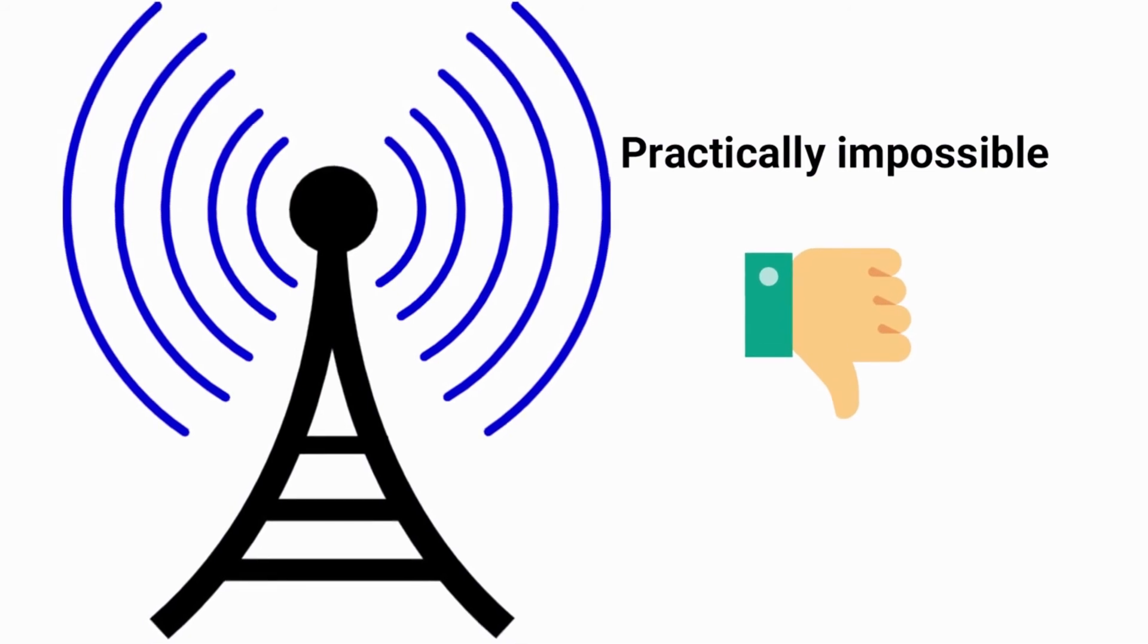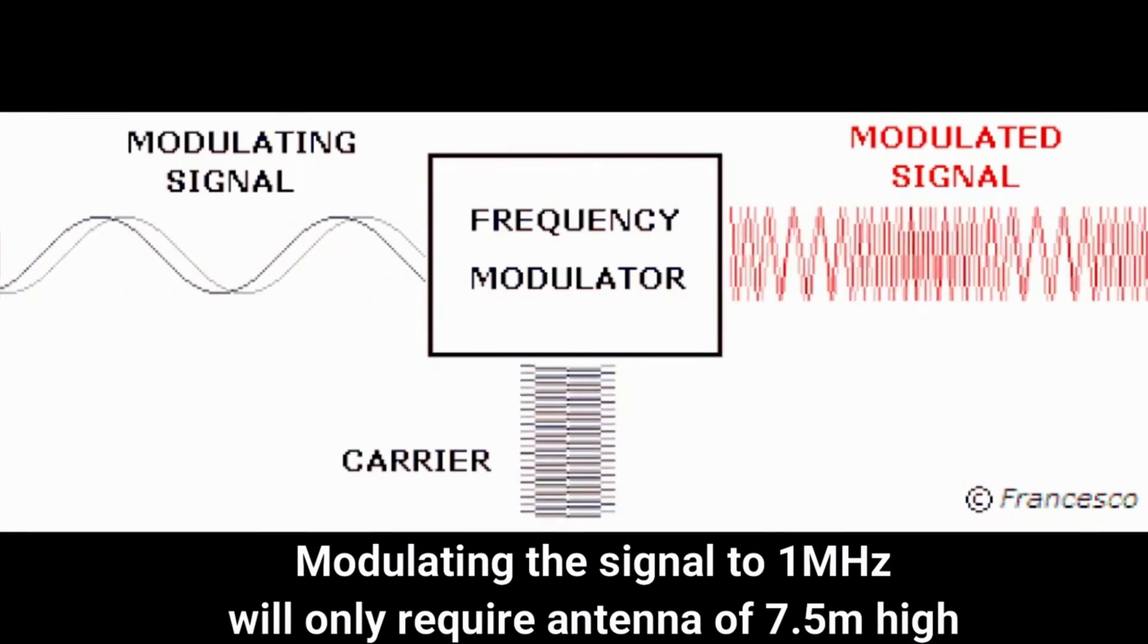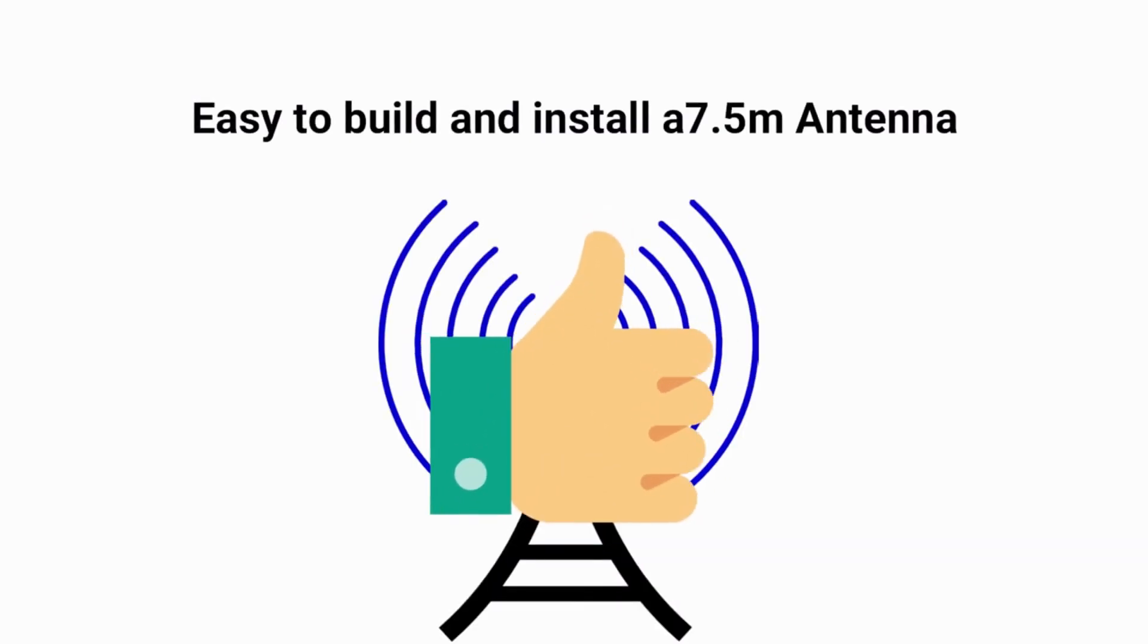And it's totally impossible to build such antenna. However, if you modulate them to 1 MHz then you need an antenna of only 7.5 meters. That is totally possible.